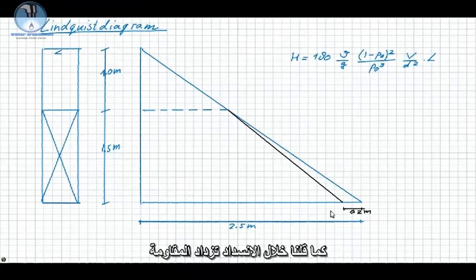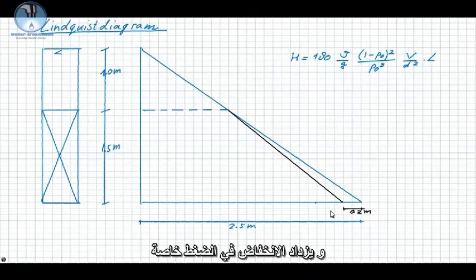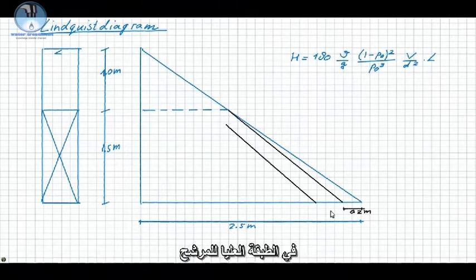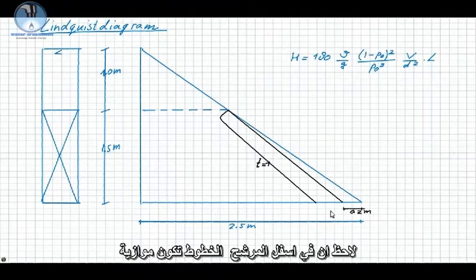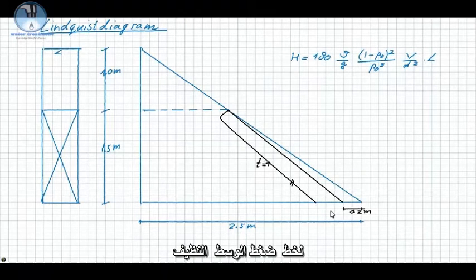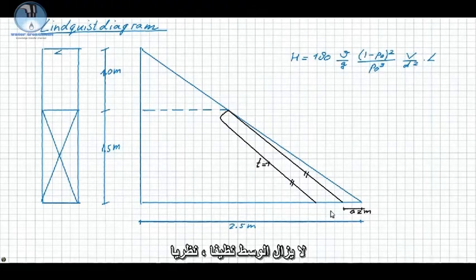During clogging, the resistance increases and the pressure drops further, mainly in the top part of the filter. The pressure line at T=1 can then be represented as follows. Note that at the bottom part of the filter, the line is parallel to the clean bed pressure line, because in that part the filter is still clean.